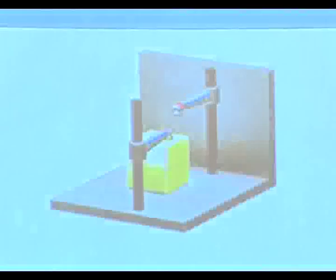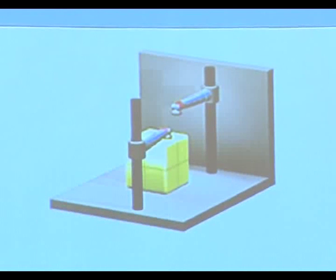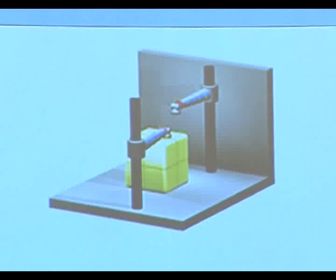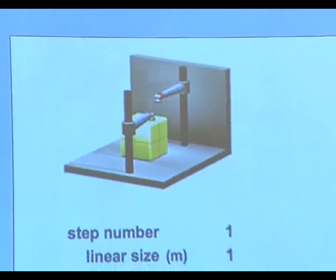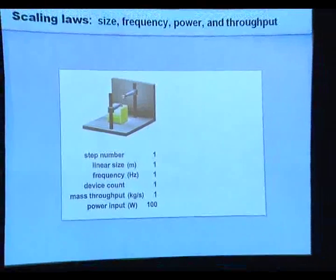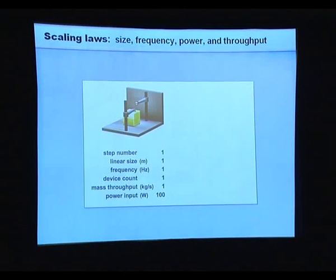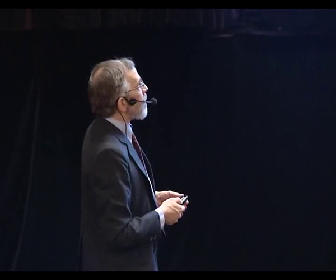Imagine that you are building something using a machine system. Using simple round numbers to show scaling: imagine a machine with two arms stacking blocks together — it picks up a block and puts it in place. Eight blocks are put together. If the frequency of completion is one hertz, and it is one meter in size — call this step one — one device produces one kilogram per second and requires 100 watts.